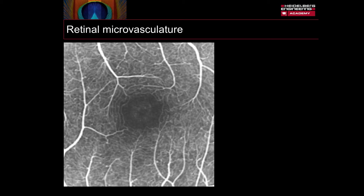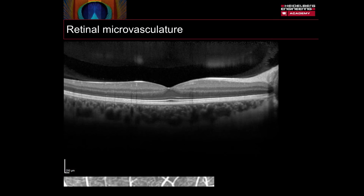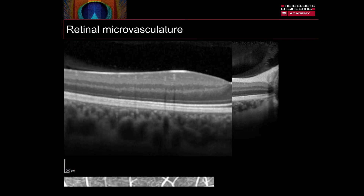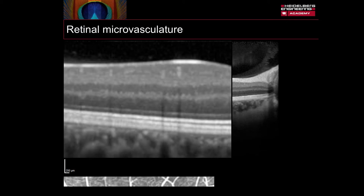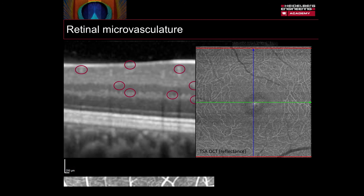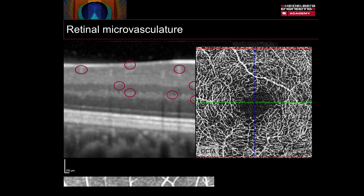Whilst fluorescein angiography imaging has permitted the visualisation of retinal vascular flow, it is OCT that has provided unrivalled images of retinal structure. The vascular structures within the retina can be identified as hyperreflective spots, which are visualised in this high magnification B-scan, and this can be observed as a vascular pattern in an ONFAS reflectance image. But the microvascular structure of the capillaries is exquisitely visualised using OCTA, which allows the visualisation of vascular structure and recording of flow without dye injection.